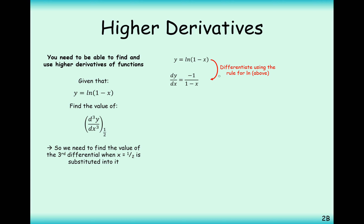One rule I didn't go through but you need to know: when differentiating ln of a function, you differentiate the inside and put it on top, and take the inside function and put it on the bottom. So the first derivative of ln(1 − x) gives us −1 on the top and (1 − x) on the bottom. We can rewrite this as −(1 − x)^(−1) in index notation.